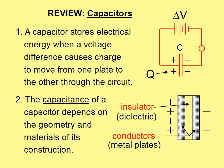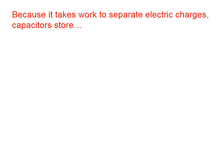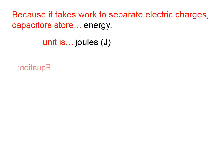One of the capacitor plates ends up with a net negative charge. The other ends up with an equally net positive charge, which we represent by Q. The capacitance of a capacitor depends on the geometry and materials of its construction. A capacitor is two metal plates separated by an insulating layer, which we call the dielectric. Because it takes work to separate electric charges, capacitors store energy. The unit for energy is, of course, in the SI system, joules, symbolized by capital J.